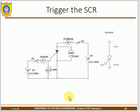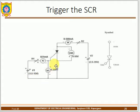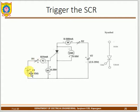In the circuit, the gate is connected with respect to cathode. On the left-hand side, a power supply is connected in series with a resistance and connected to the gate terminals at the negative side. An ammeter is connected in series and a voltmeter is connected in parallel to measure the readings.